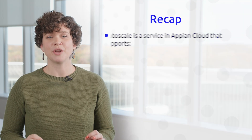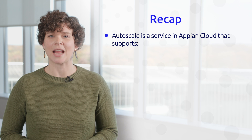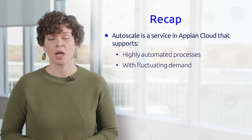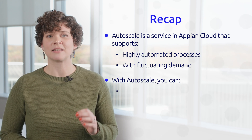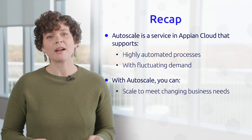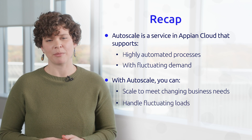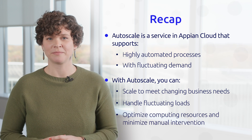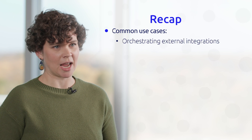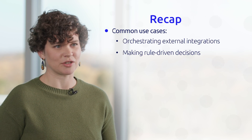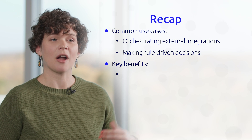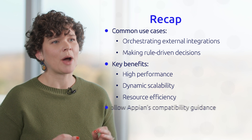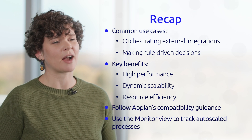Let's recap. Autoscale is a new separately licensed service in Appian Cloud that supports highly automated, high-throughput processes with fluctuating demand. With Autoscale, you can develop processes that scale to meet changing business needs, rely on Appian to handle fluctuating loads without pre-provisioning resources, and optimize your use of computing resources while minimizing manual intervention. Common use cases include orchestrating external integrations and making rule-driven decisions. The key benefits of Autoscale are high performance, dynamic scalability, and resource efficiency. Once enabled, follow Appian's compatibility guidance and use the Monitor view to track Autoscale processes.